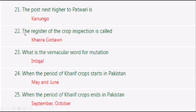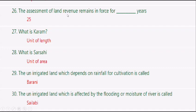The post next higher to Patwari is Kanungo. The register of the crop inspection is called Khasra Gurdwari. The vernacular word for mutation is Intikal. The period of Kharif crops starts in Pakistan in May and June, and ends in September and October.